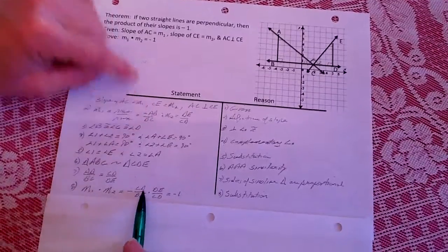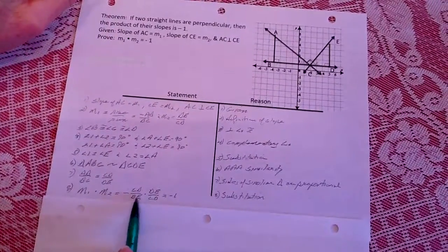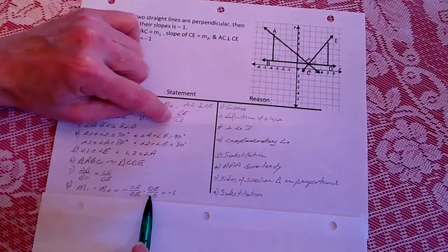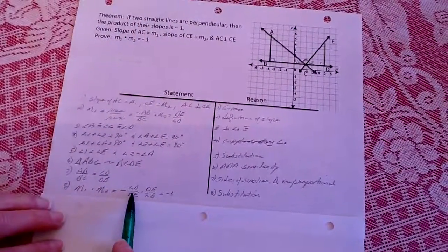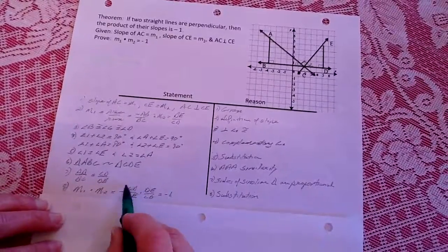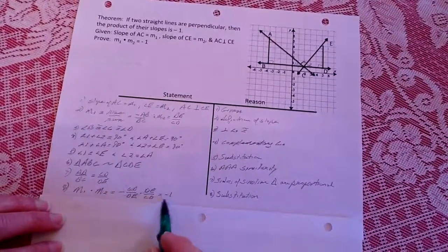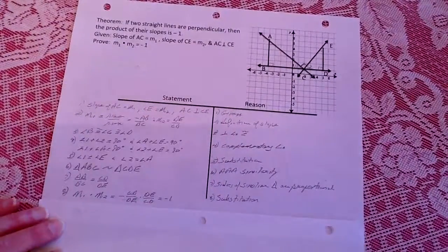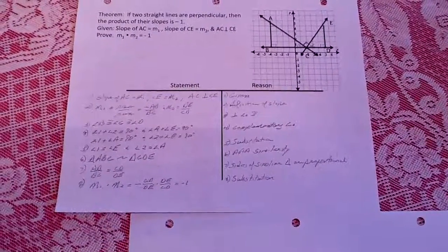So CD over DE times DE, which is this slope right here, and you multiply those two together, those cancel out, cancel out, so you get 1 over 1 and you have a negative, so the answer is negative 1, which we just proved through substitution.